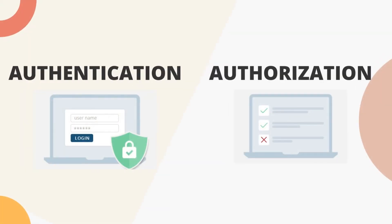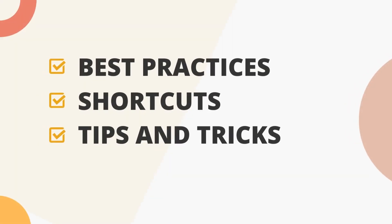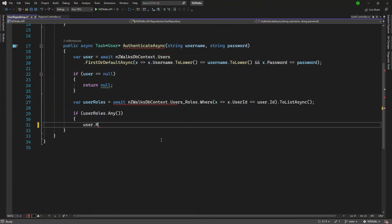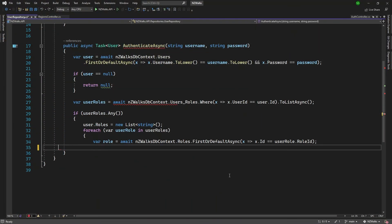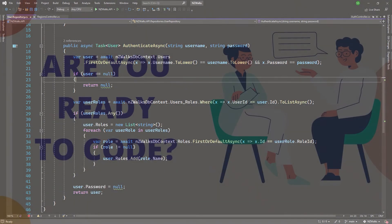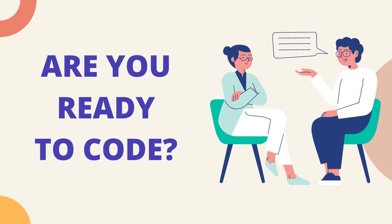We will add validations to our API using both the conventional approach and a third-party library called Fluent Validation. Then we will add authentication and role-based authorization to ensure only authenticated users can access our API resources. We will follow best practices from the very start, and I will share tips, tricks, and shortcuts throughout the course. By the end, you will master all the skills needed to create highly scalable ASP.NET Core web APIs from scratch. I am excited to do this and I hope you will have fun doing this alongside me.